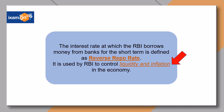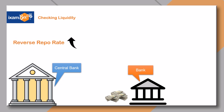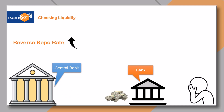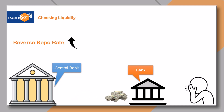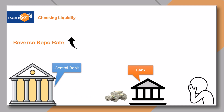The main objective of the reverse repo operation is to check liquidity and inflation. For example, when the RBI feels the need to absorb liquidity from the market, it will increase the reverse repo rate. The banks will find it lucrative and safe to park money with the RBI, and there will be less scope of credit for the market. This is how reverse repo operations are used to check liquidity.